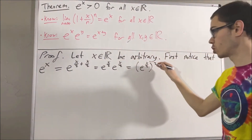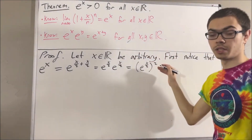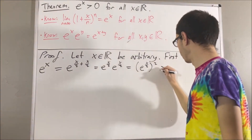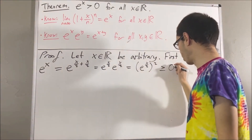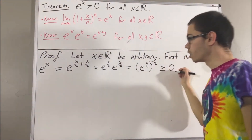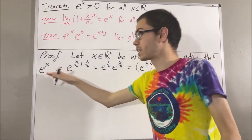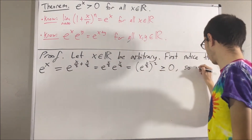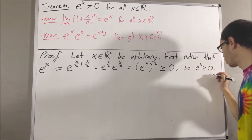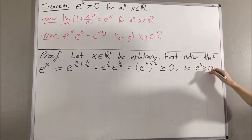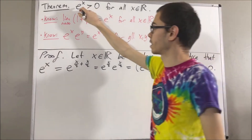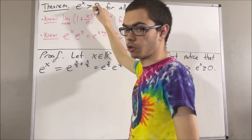And this is just e to the x over 2 squared. We know that any real number squared is greater than or equal to zero, so e to the x is greater than or equal to zero. We've shown that e to the x is greater than or equal to zero, but we want to show that e to the x is strictly greater than zero.